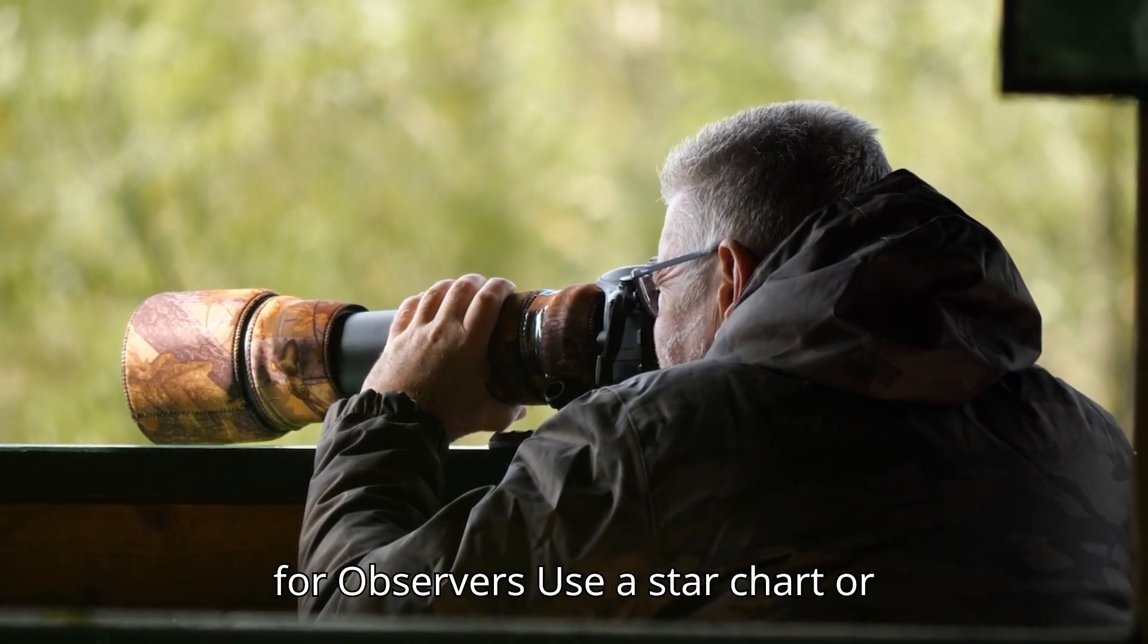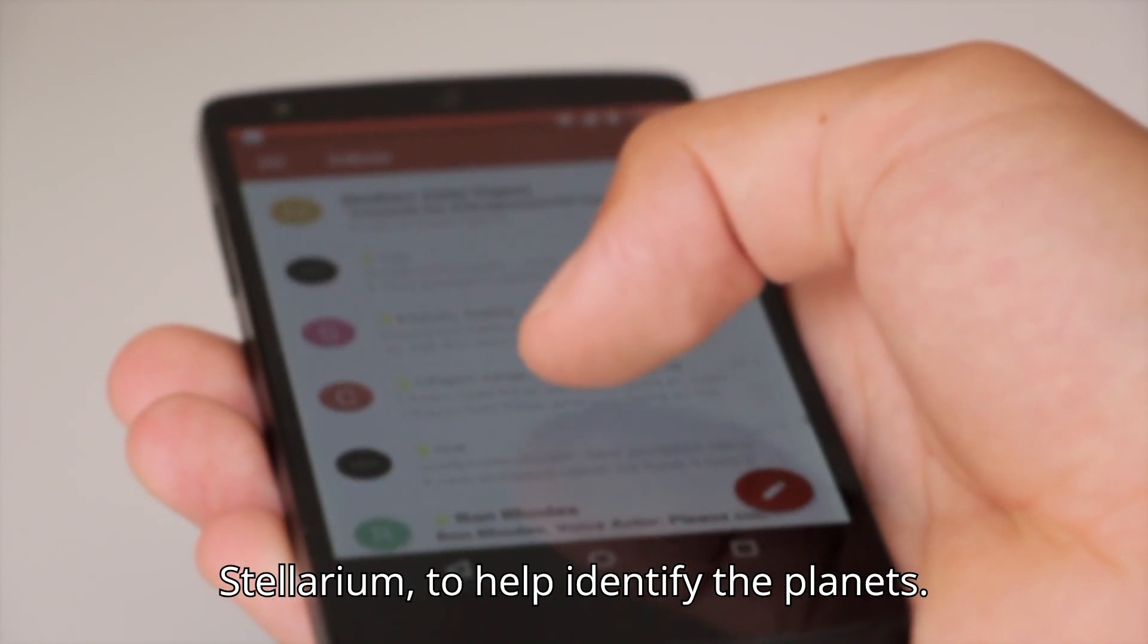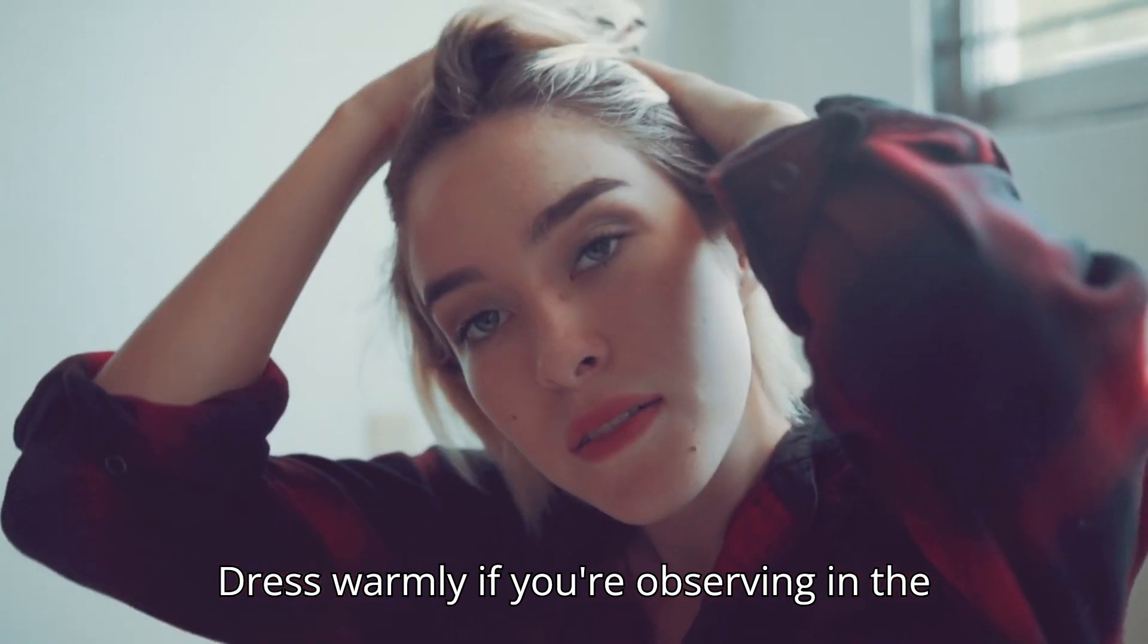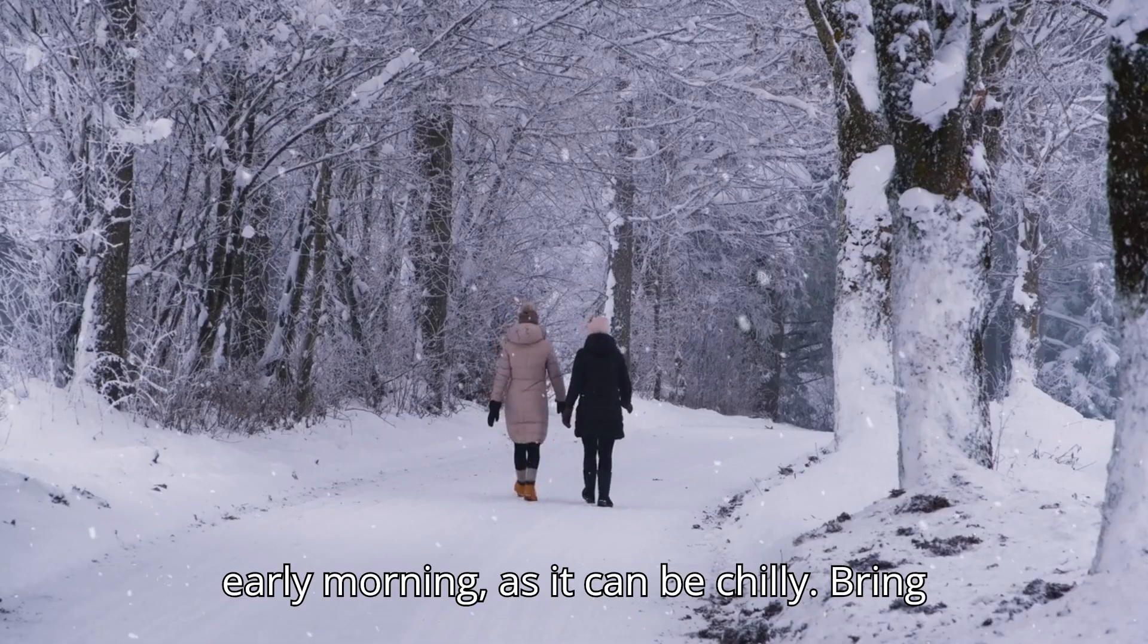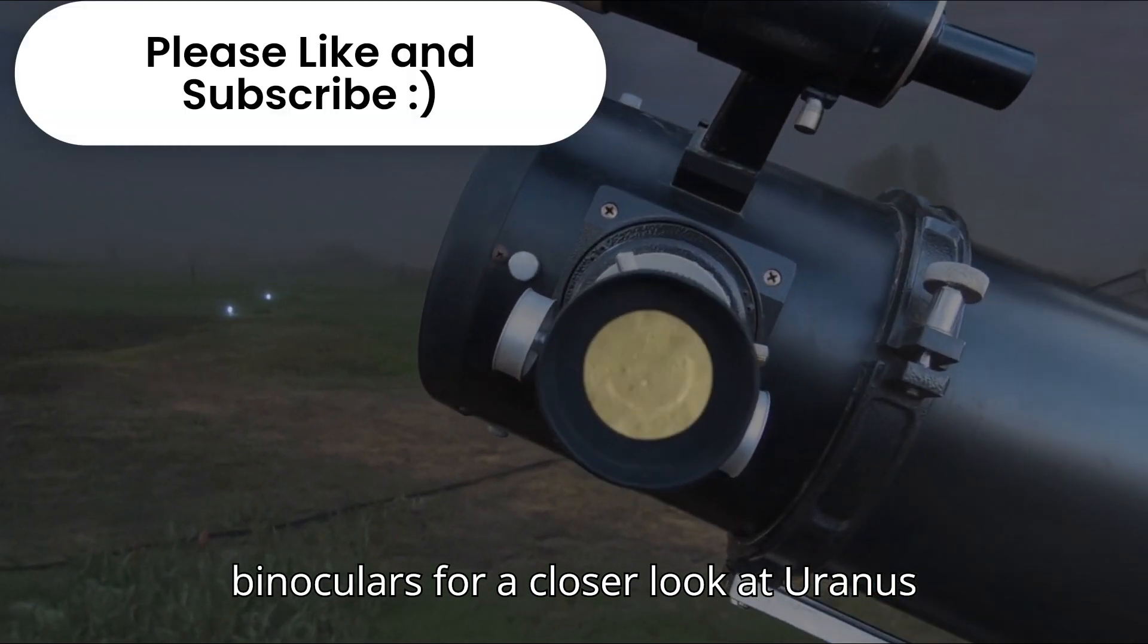Tips for Observers: Use a star chart or astronomy app like SkySafari or Stellarium to help identify the planets. Dress warmly if you're observing in the early morning, as it can be chilly. Bring a telescope or binoculars for a closer look at Uranus and Neptune.